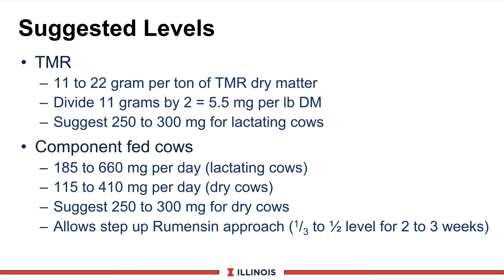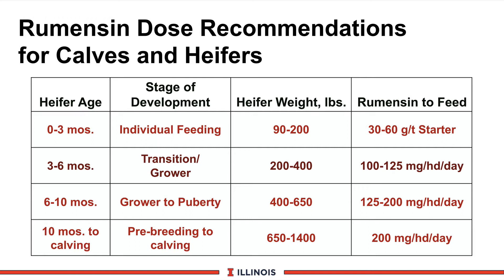One nice thing with the component-fed herd is it allows you to step up the level of rumensin in smaller increments. Remember, this is an antibiotic that changes rumen fermentation. By slowly increasing it in one-third to one-half level step-ups, you allow the rumen to adjust, minimizing effects on milk fat components. For growing animals — another excellent use for ionophores — the chart shows different ages, stages of development, weights, target weights, and the milligrams to be fed. As animals get bigger and consume more dry matter, the level of rumensin added increases accordingly.